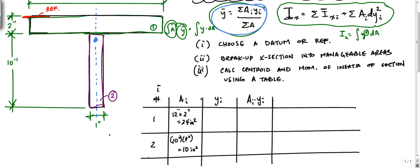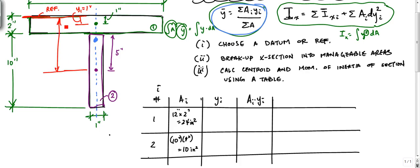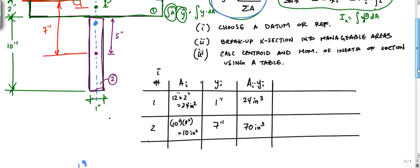The centroid of area 1 is at 5 inches from the reference, and the centroid of area 2 is at 1 inch from the reference. Y_1, the distance from the reference to the centroid of area 1, is 1 inch. The distance of the second centroid from the reference is 5 plus 2 more inches, so that's 7 inches. Then running through: 24 times 1 gives 24 inches cubed, and 10 times 7 gives 70 inches cubed.